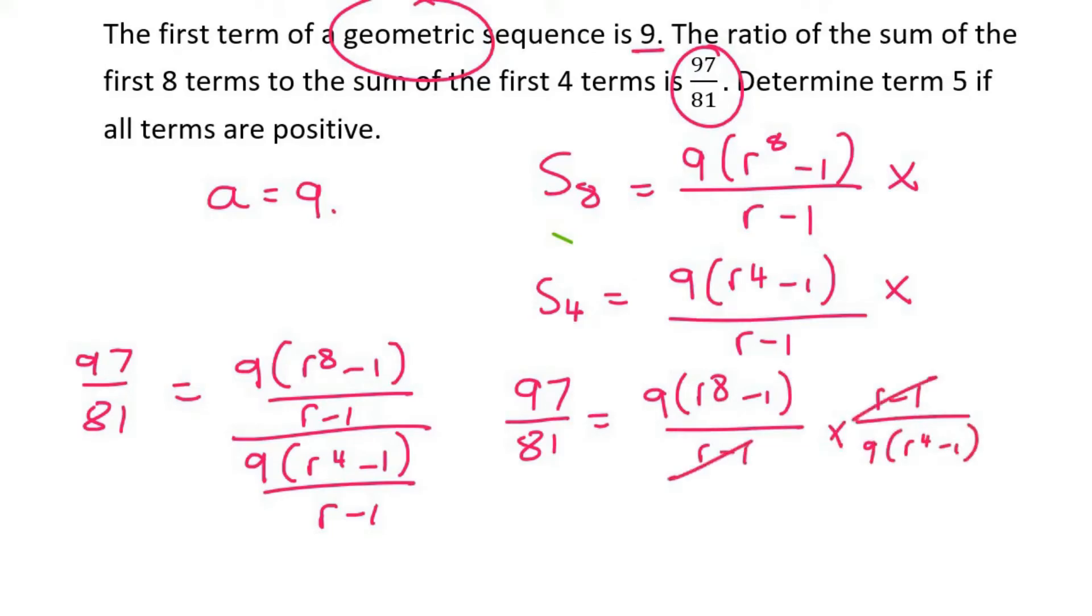Okay, so those cancel. That's quite nice. The 9s also cancel out. And so we're left with 97 over 81 equals (R^8 minus 1) over (R^4 minus 1).